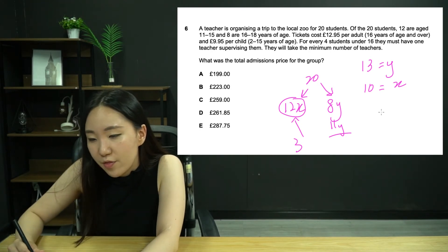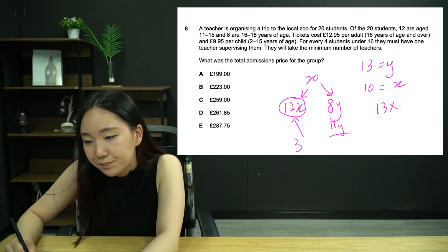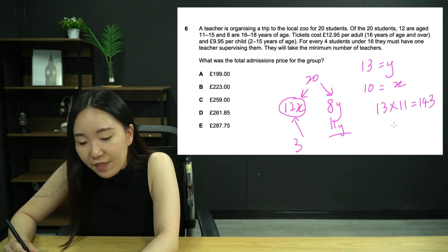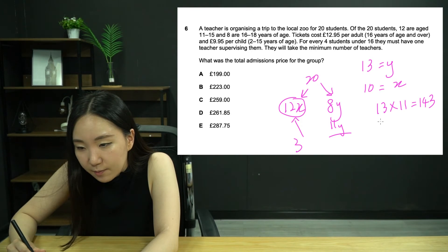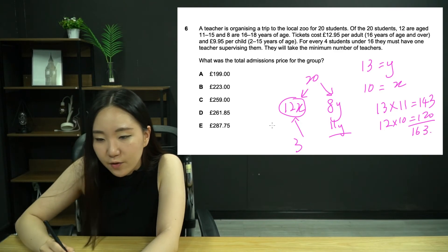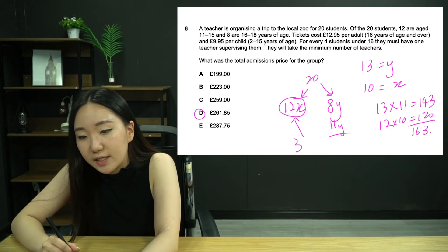Every four students under 16 must have one teacher supervising them. Got 12 kids, we want the minimum, so three teachers. So it's actually three adult tickets. I'm going to do 13 times 11, which gives us 143, and then 12 times 10, which gives us 120. That's 263. So obviously it is going to be this one here.